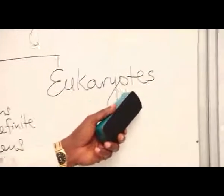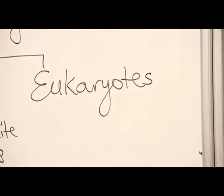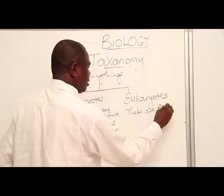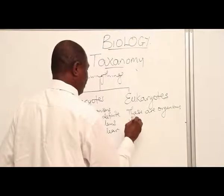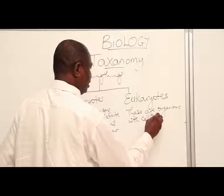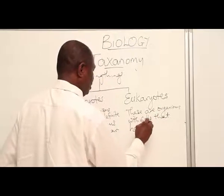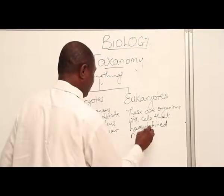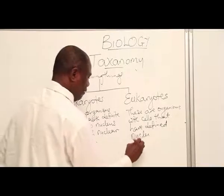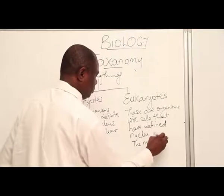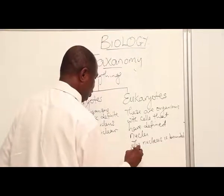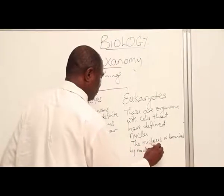The other ones are organisms whose cells have a defined nucleus. These are organisms with cells that have a definite or defined nuclear membrane.